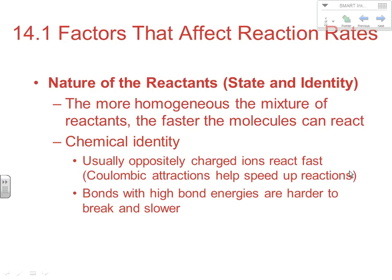Other things related to chemical identity: usually oppositely charged particles react fast — case in point, the aqueous precipitation reaction — because those Coulombic attractions help speed up the reactions. If they get close to each other, they're much more likely to come in contact because of Coulombic opposite attraction. Another fundamental thing: in order to react molecules with each other, we first have to break apart the old arrangement, and that requires energy. Bonds that are higher in bond energy are going to be harder to break, and that's going to slow down the reaction process. So bond strength can play an important role in how fast certain reactions happen.